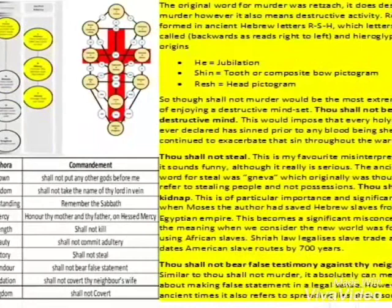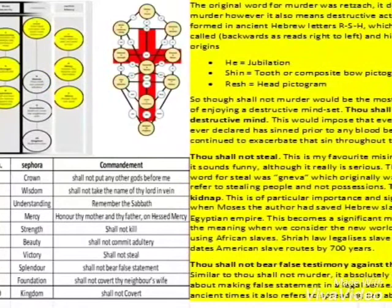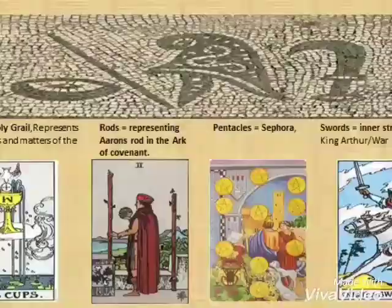The Ten Commandments were originally written with four-letter-long words. Murder would actually mean to have an unstable mindset or a destructive mind. Thou shalt not steal originally meant people — this would be the slave trade. We look at the slave trade in Islam and the foundation of the New World. It's no wonder that we forgot what it really meant.